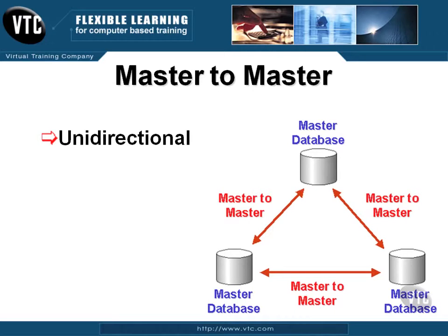A much more complicated form of replication is where it can replicate from master to master — in other words, it can read and write to all databases across the network. It's bidirectional. That's complicated and very cumbersome and very slow in certain situations.